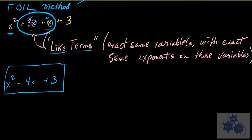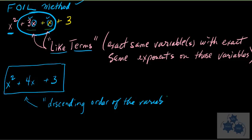The other thing you want to do is you always want to write the variable with the largest exponent that one first. Then, the variable with the next largest exponent next. And then, the constant last. So, this is called descending order of the variable. So, that's how you're going to want to write a polynomial.